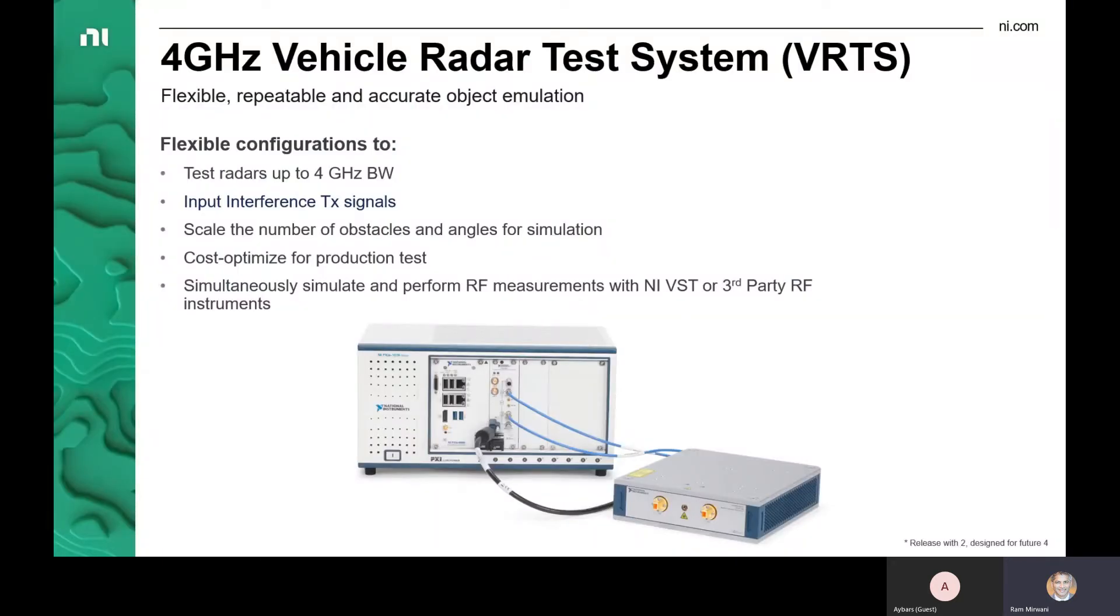So the NI-VRTS system, the new version, goes up to support up to four gigahertz bandwidth. It enables input interference transmit signals as well for more robust testing. It continues on the capability for scaling multiple numbers of obstacles and angles, which is what we're going to demonstrate today.